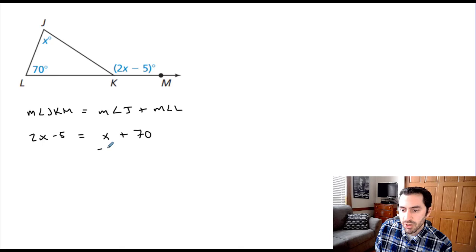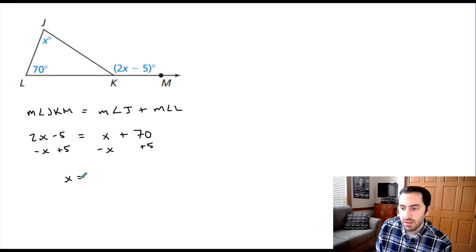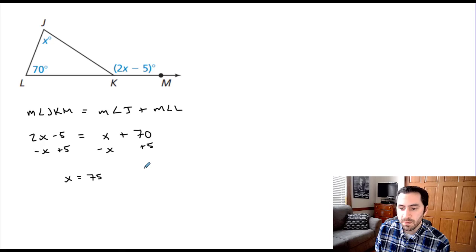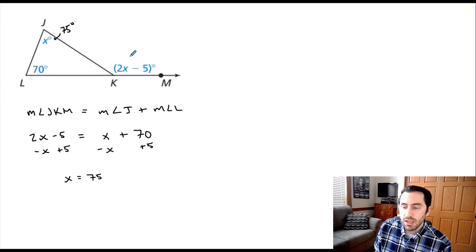Let's subtract x from both sides and add five in the same step. So 2x minus x gives us 1x, and 70 plus 5 gives us 75. So x equals 75, meaning angle J is 75 degrees. Now we can substitute that in to find out how big our exterior angle is.